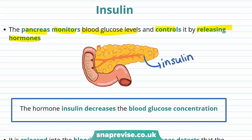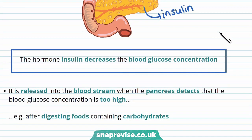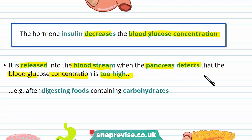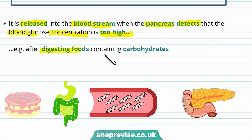What does insulin do? Insulin decreases the blood glucose concentration — that's the amount of blood glucose in your blood. This insulin is released into the bloodstream when the pancreas detects that the blood glucose concentration is too high. This happens after digesting foods containing carbohydrates, for example a piece of toast or a slice of cake.